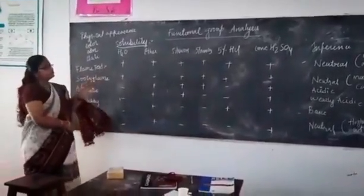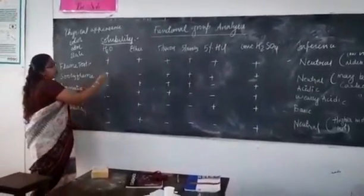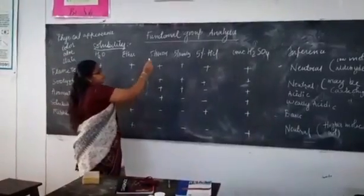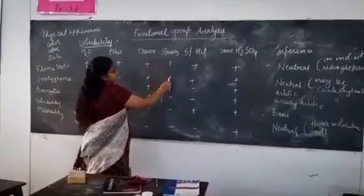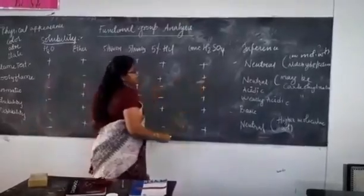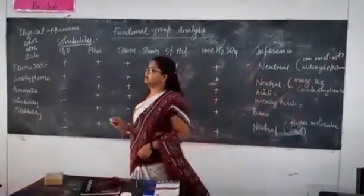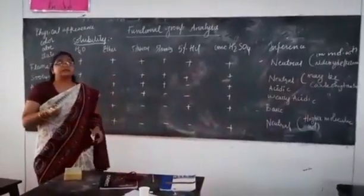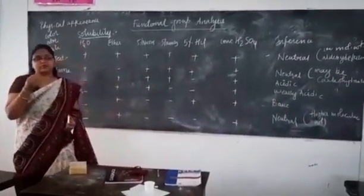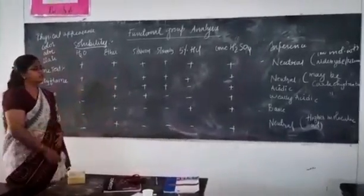In another case, if the compound is soluble in water, insoluble in ether, and soluble in 5% NaOH, 5% sodium bicarbonate, 5% HCl, and concentrated sulfuric acid — it is neutral and may be a carbohydrate. Carbohydrates give a characteristic blackening reaction with concentrated sulfuric acid.